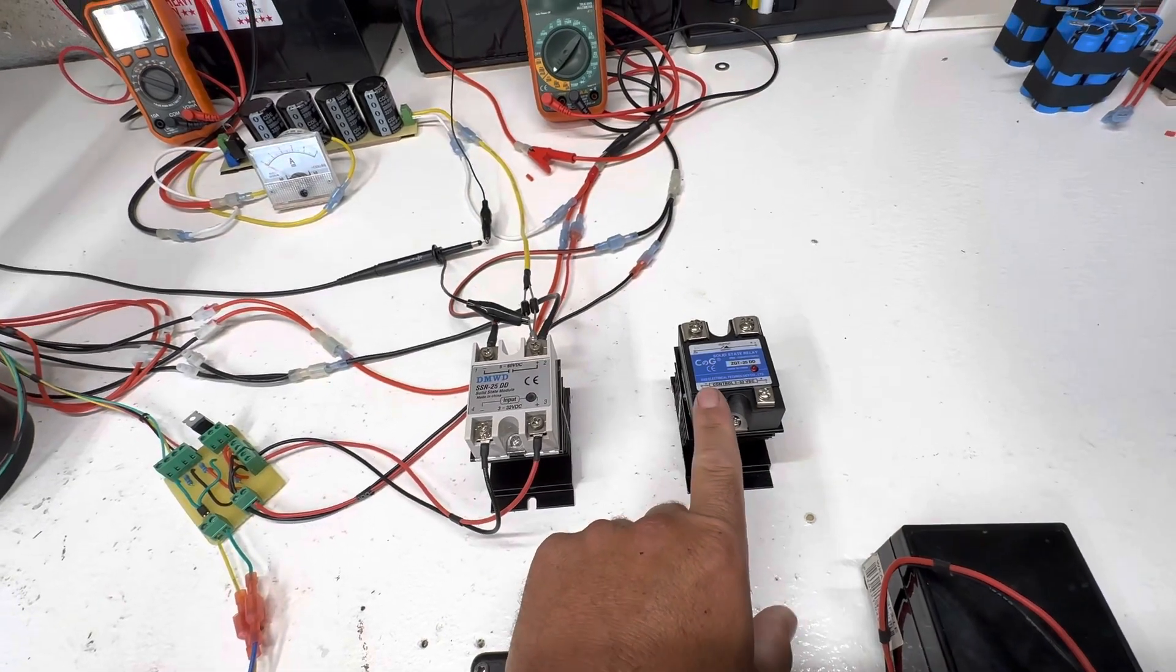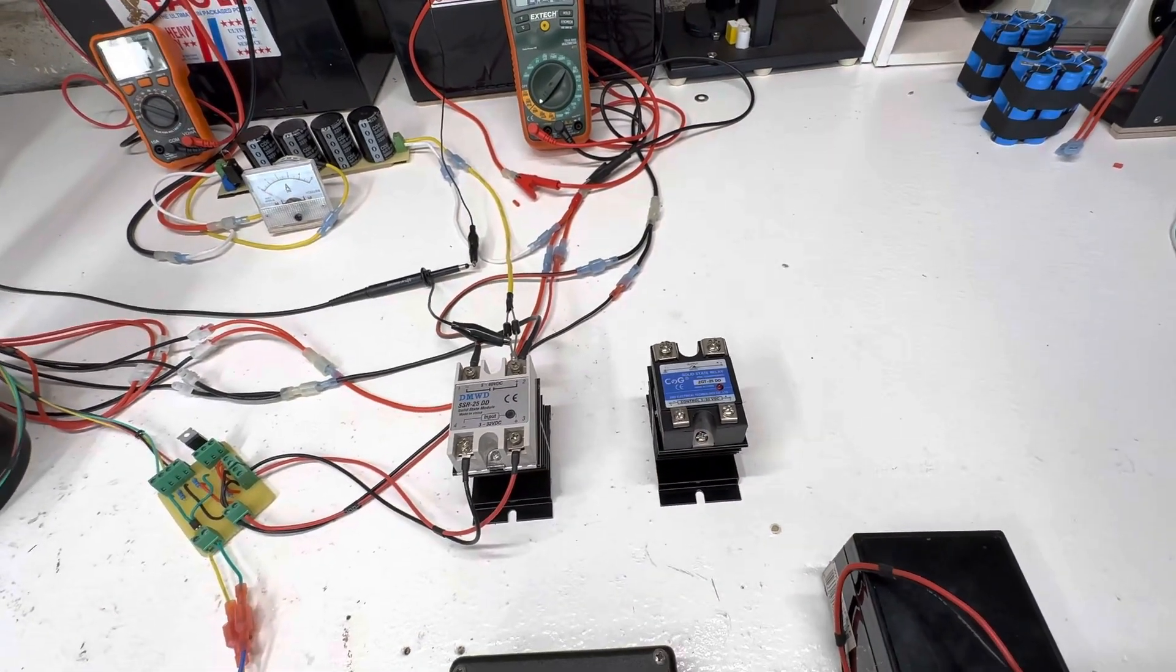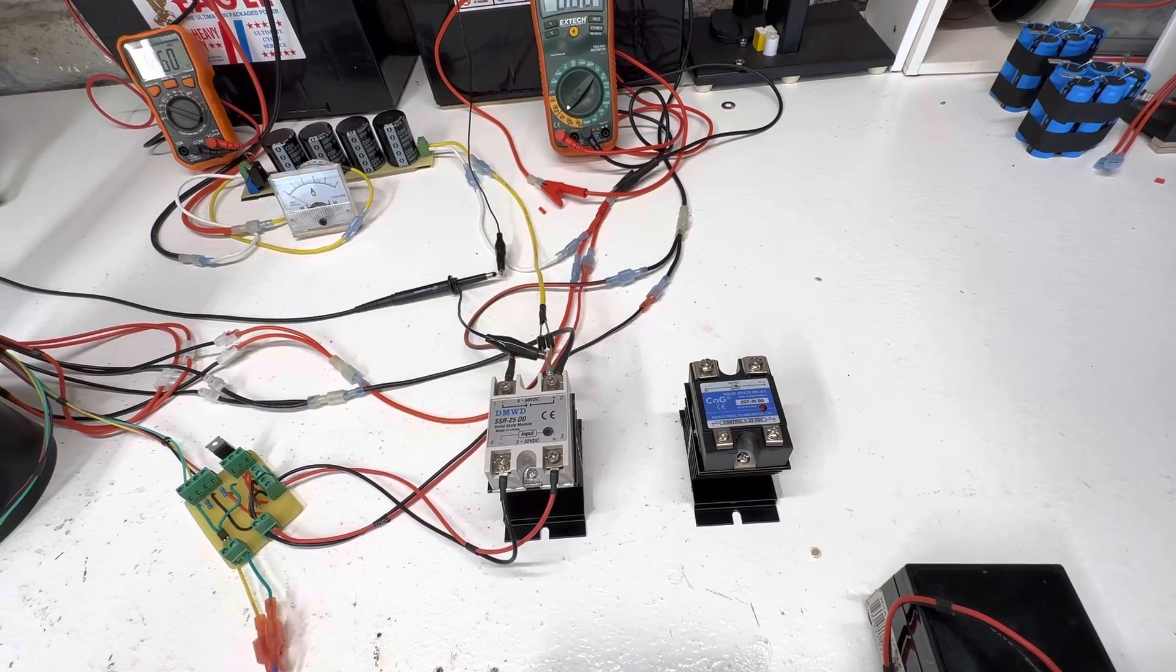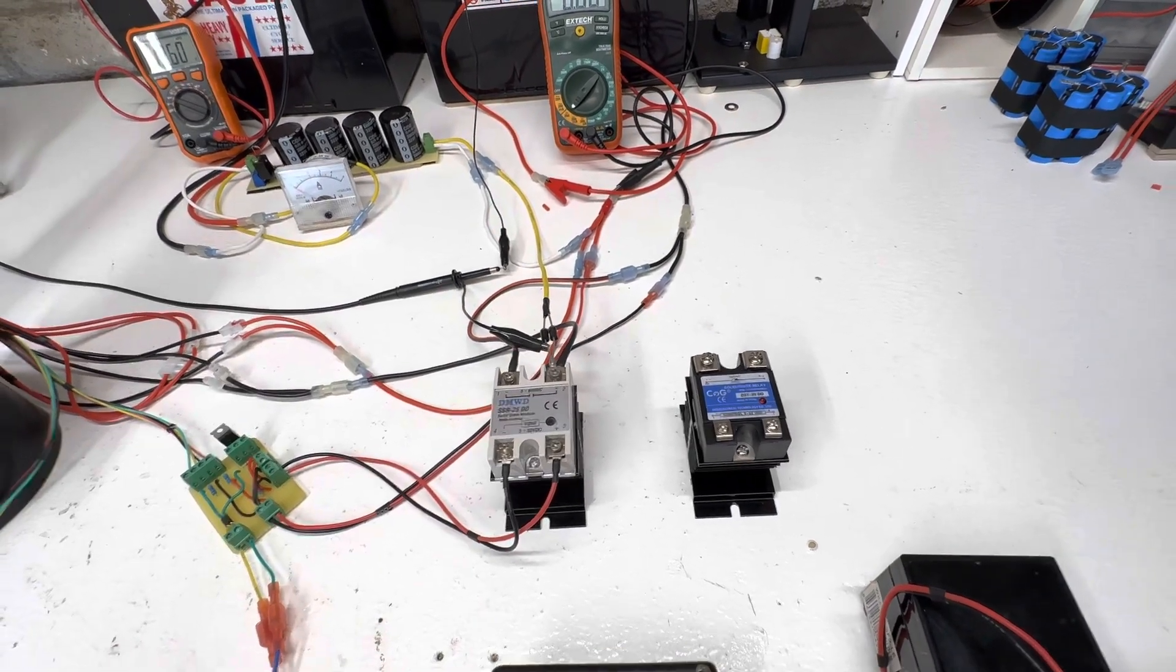When it's at full power, it runs good. But when you dim it down with the pulse width modulator, the spikes just don't come out the same as a MOSFET.